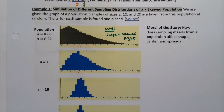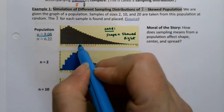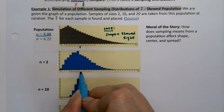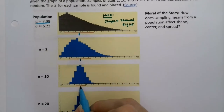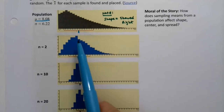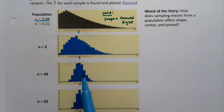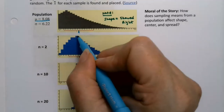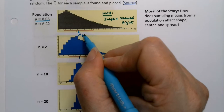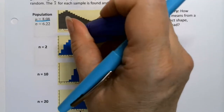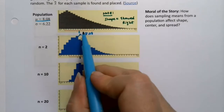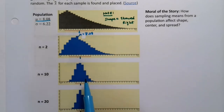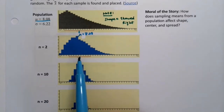Let's look at the center. The center for the population is right here at mu equals 8.08. Now the center for the next graphs is also at that same line. You might wonder why there are two little lines — a red one and a blue one. The little red line is the median, whereas the line on the right is mu, which is 8.08. The median is less than the mean because it's skewed right — the mean gets pulled towards the tail — so that's why you're seeing a gap.